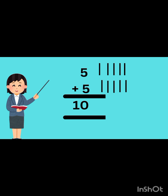Now five plus five: one, two, three, four, five — now make another five lines in front of five: one, two, three, four, five. Five plus five makes ten. Count all together: one, two, three, four, five, six, seven, eight, nine, ten. It's ten.